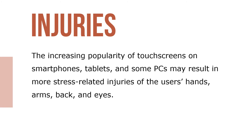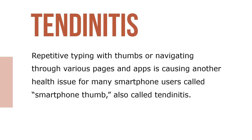The increasing popularity of touch screens on smartphones, tablets, and PCs may result in more stress-related injuries of the user's hands, arms, backs, and eyes. Because these devices can be accessed most anywhere and are used in any number of body positions, users should exercise caution and take frequent breaks. Repetitive typing with thumbs or navigating through various pages and apps is causing another health issue for many smartphone users called smartphone thumb, also called tendinitis.